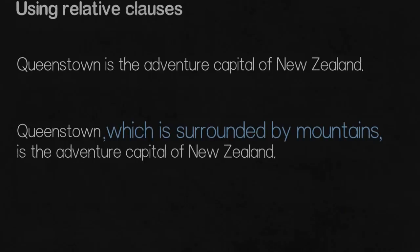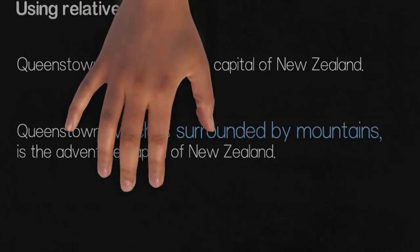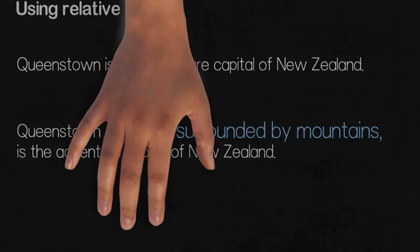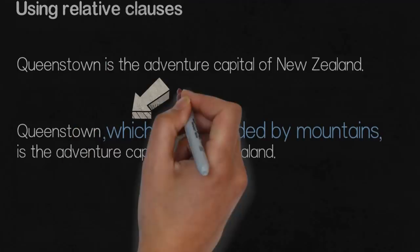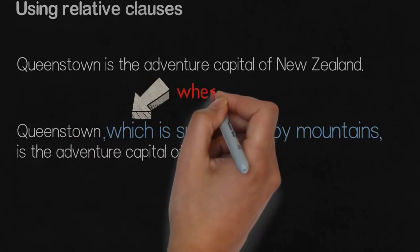Now, one common mistake is that students use the word 'where', so don't use 'where' as a relative pronoun. Never use that. Always use 'which' — which is surrounded by mountains.